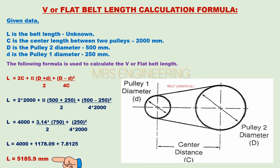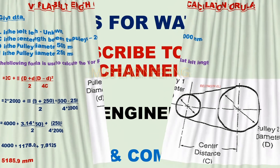After solving the equation step by step, L equals 5185.9 millimeters. The belt length L equals 5185.9 millimeters.